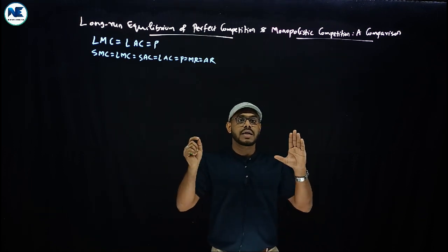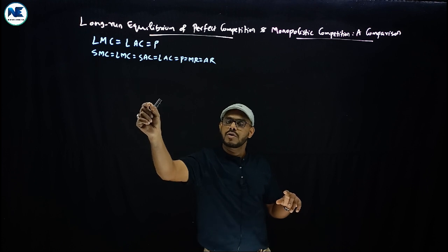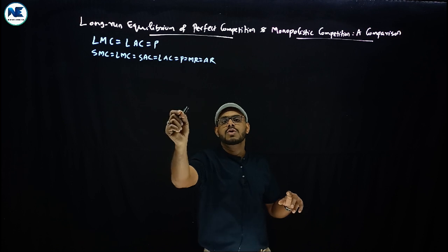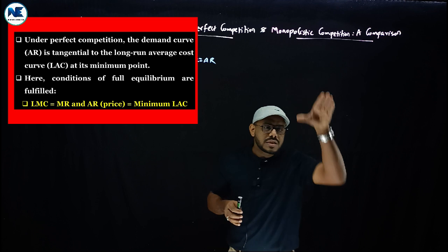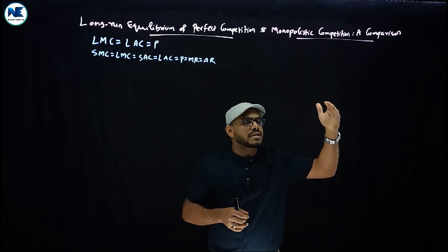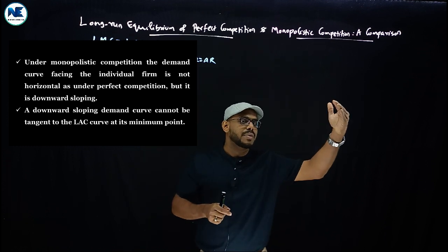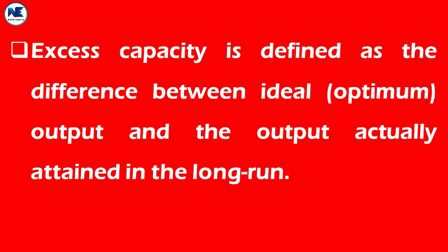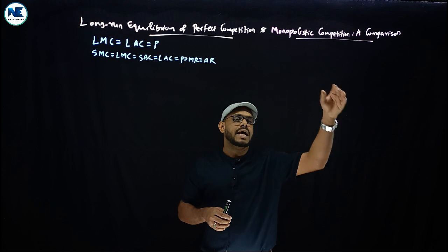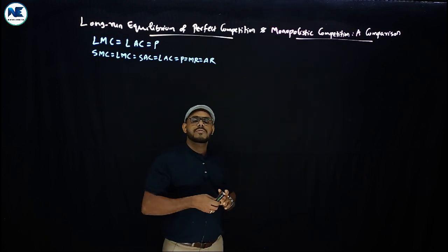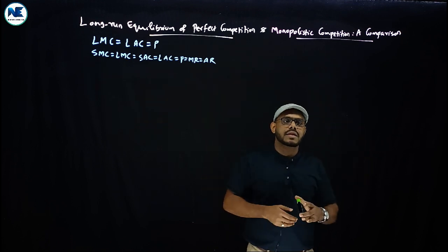The key comparison point is that under perfect competition, a firm earns normal profit and at the same time its cost lies at the minimum point or bottom point of the long-run average cost curve. Under monopolistic competition, while earning normal profit, we can see misallocation of resources or under-utilization of plant capacity — the concept of excess capacity. The actual output is less than the ideal output.